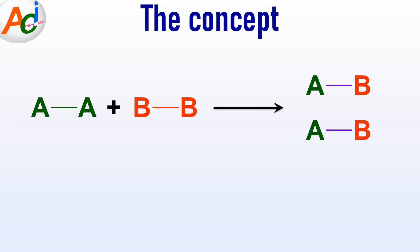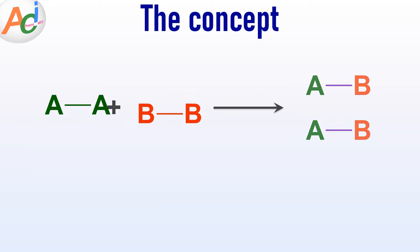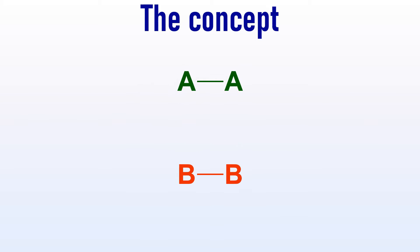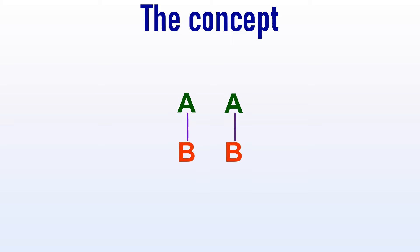Let us examine the reaction between molecules A2 and B2, which leads to the creation of two AB molecules. As is typical in chemical reactions, the initial step involves the breaking of existing bonds, followed by the subsequent formation of new bonds between the A and B atoms. In this particular reaction, the pre-existing bonds within the A2 and B2 molecules are initially broken, and we know that a certain amount of energy is required to break these bonds.